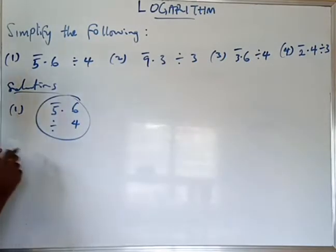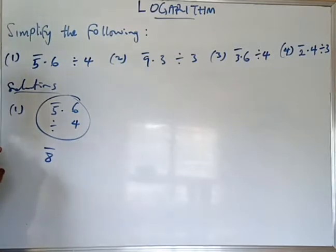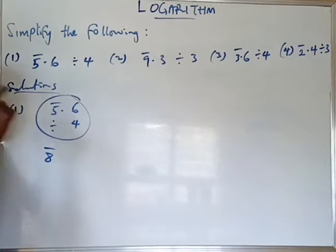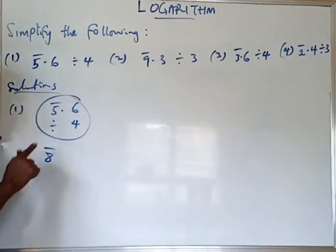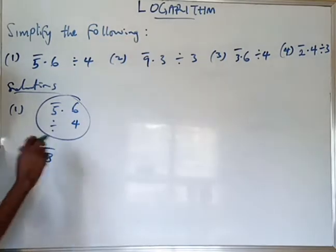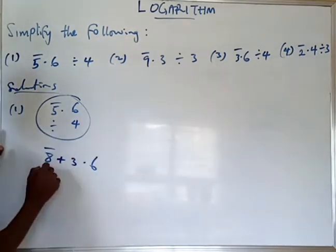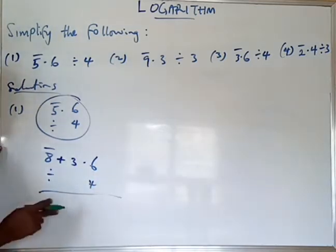This will be written as bar 8, not bar 5. I call it bar 8 because the next number after 5 that can be divided by 4 without leaving a remainder is 8. What we actually did was add 3 to the bar number, so the expression becomes bar 8 plus negative 3, which gives us bar 8 minus 3 plus .6, all divided by 4.